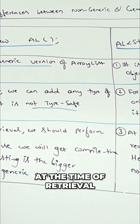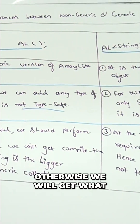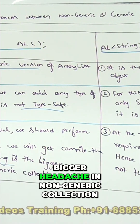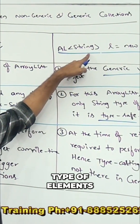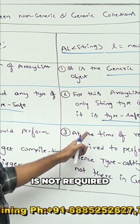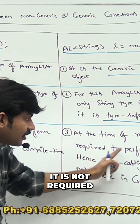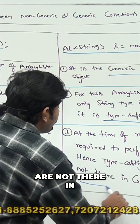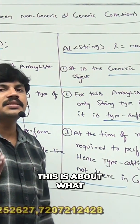At the time of retrieval, for the non-generic ArrayList, we should perform type casting, otherwise we will get a compile error. Hence type casting is the bigger headache in non-generic collections. But in the generic ArrayList, there is a guarantee for the type of elements, so type casting is not required at the time of retrieval. Type casting headaches are not there in generic collections.